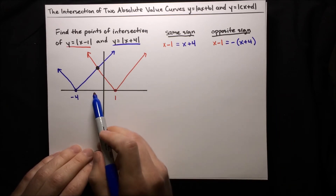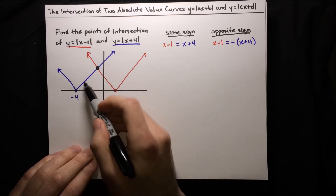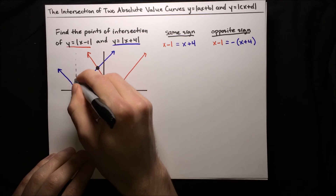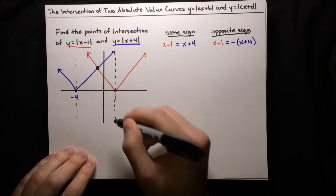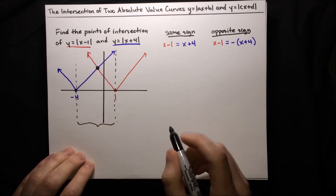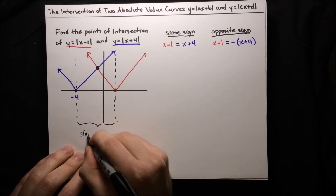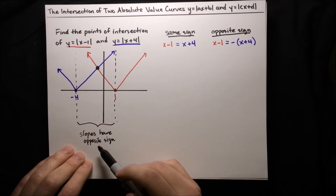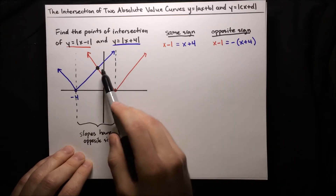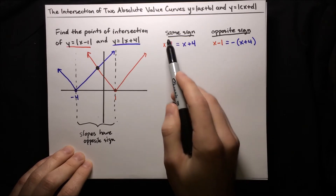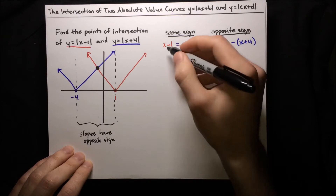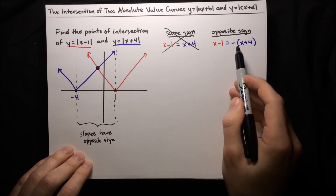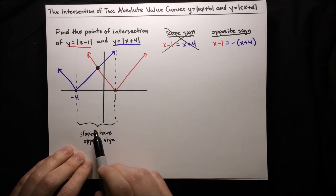To see from the graph which one is going to be true, let's look at the branches of the absolute value graphs between these dotted lines. Between the dotted lines, these two branches have slopes of opposite sign. Slopes have the same sign corresponds to the same-sign equation, so it's not that one. When the inputs are opposite sign, the slopes also have opposite sign — there's a positive 1x here and a negative 1x here. So the opposite-sign equation is the one we want to solve.